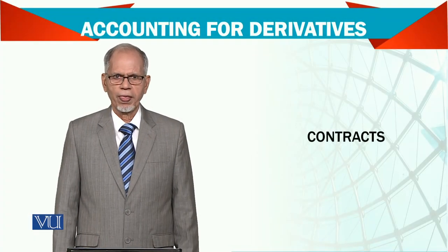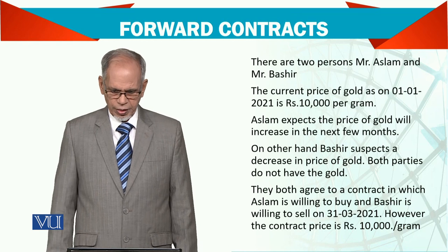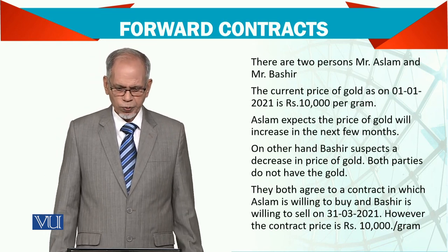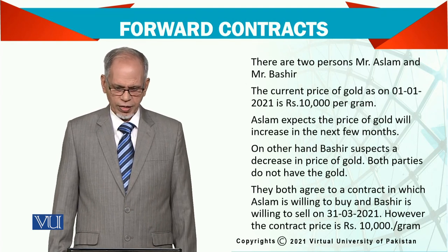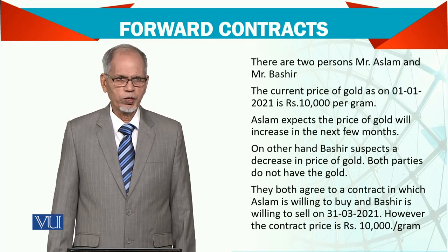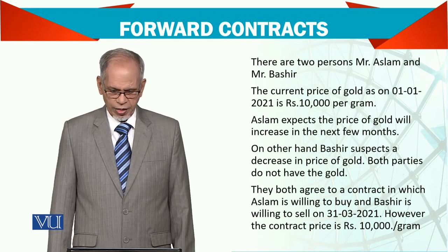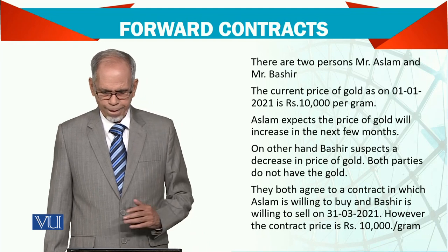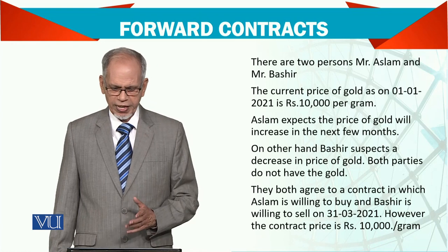Now let us see the contracts one by one — forward contracts. There are two parties: Aslam and Bashir. The current price of gold, say on 1st January 2021, is 10,000 rupees per gram. Aslam expects that the gold price will increase in the next few months.